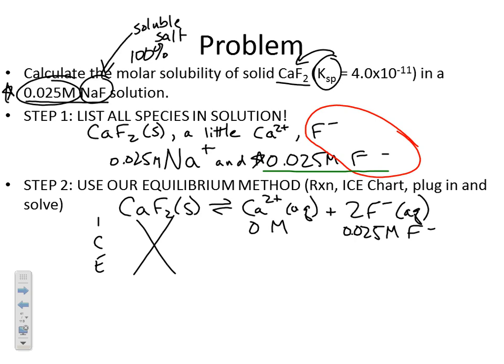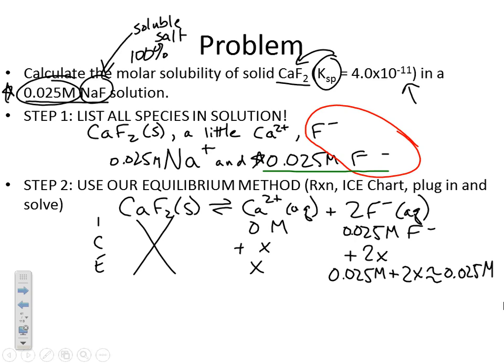For the change row, since I don't know equilibrium concentrations, my change is going to be x. So it's plus x for calcium and plus 2x for fluoride. The equilibrium concentrations are: calcium = x, and fluoride = 0.025 + 2x. I'm going to make an assumption because the K value is very small, so fluoride is approximately 0.025 molar. You might ask: but it's 2x, can you still make that assumption? If you double something incredibly small, it's still very, very small. So yes, we can still assume x is going to be very small.